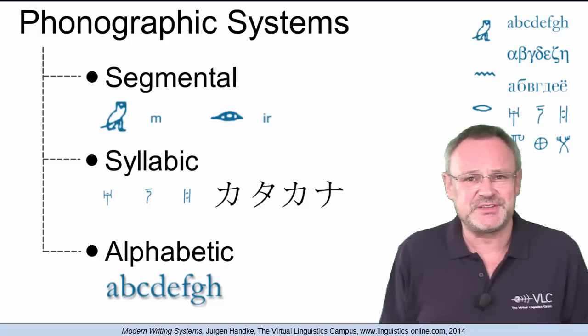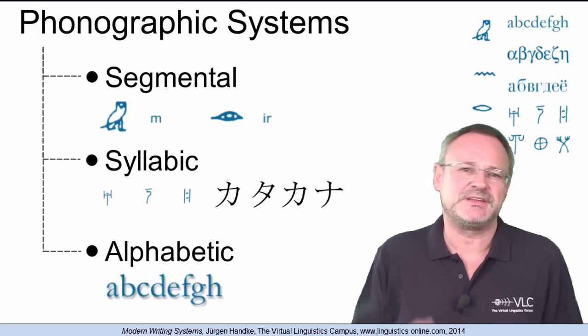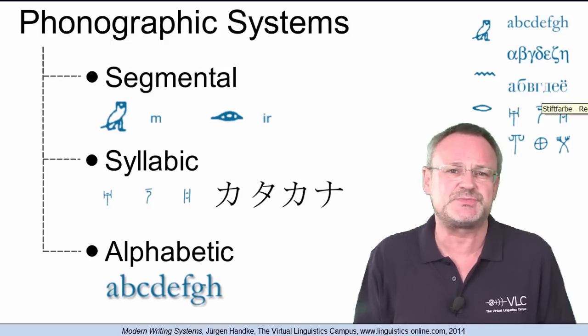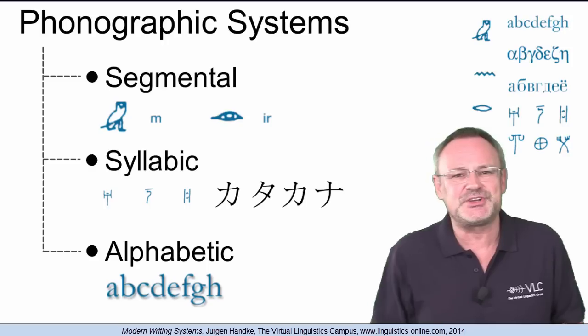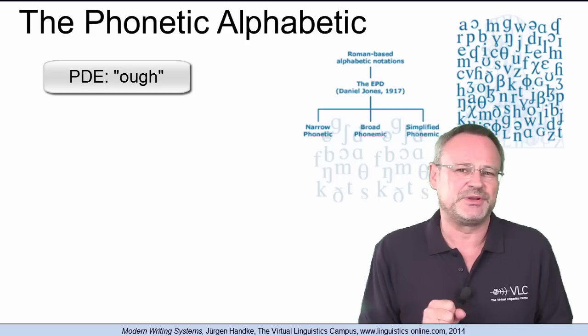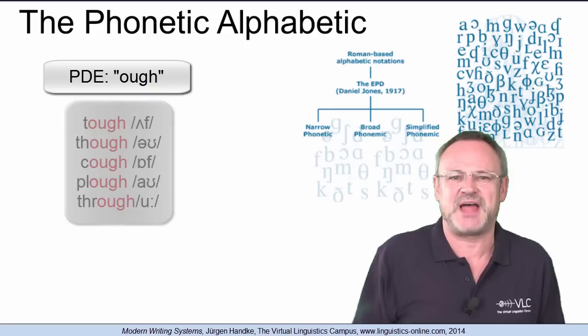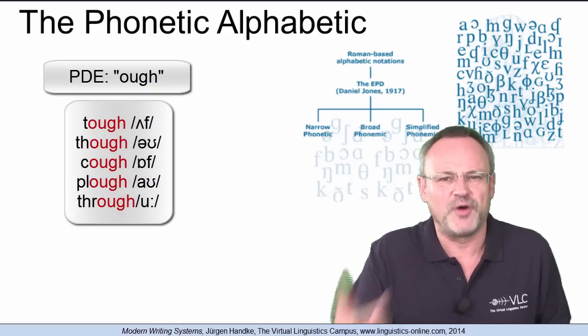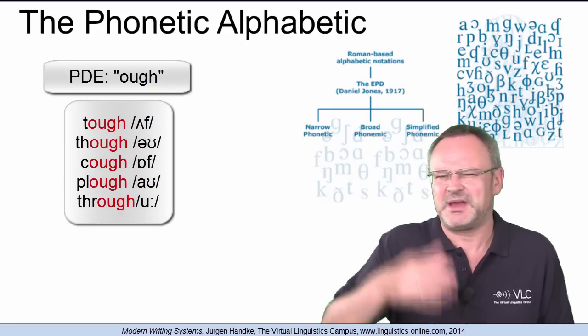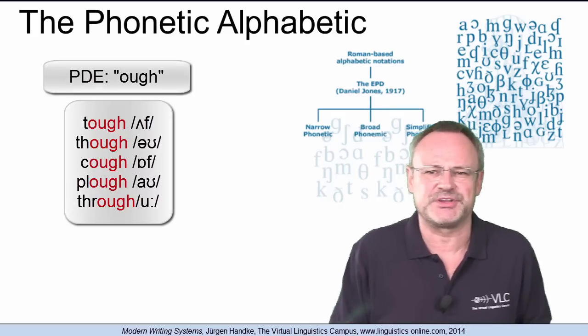Despite their goal to represent the pronunciation of their words, the alphabets of most languages exhibit at least some discrepancies between sound and spelling. Take present-day English O-U-G-H as an example. This character combination can be pronounced in several ways, for example as tough, though, cough, plow, through, thorough and some more examples.